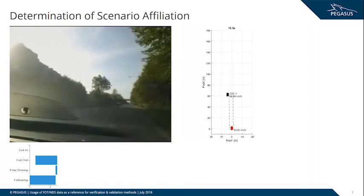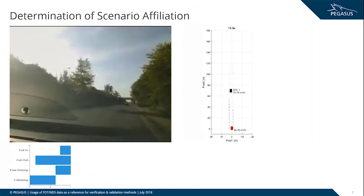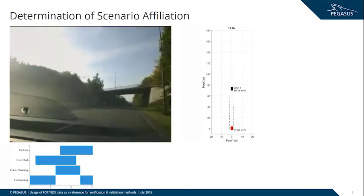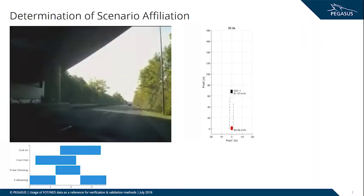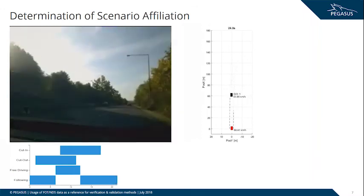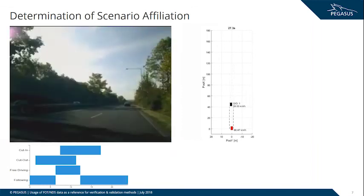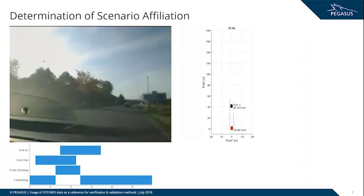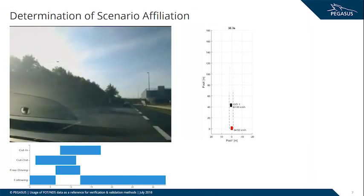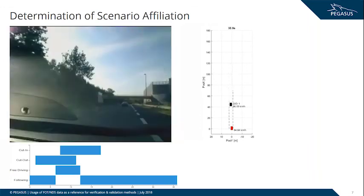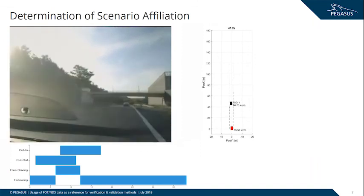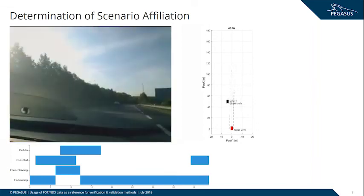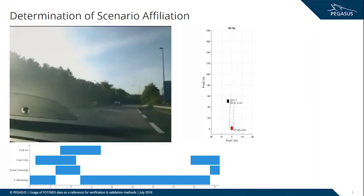On this slide, the scenario affiliation is visualized. You can see the video on the right side as a top-view, and at the bottom you can see the automatically identified scenarios. We already saw a cut-in and a cut-out maneuver, free driving, and following. In a few seconds the cut-out scenario begins again, then a cut-in follows. The algorithms in the database can detect those scenarios automatically.